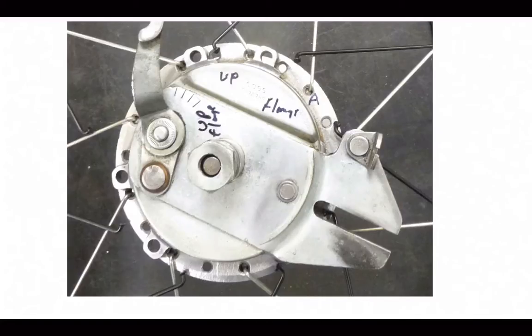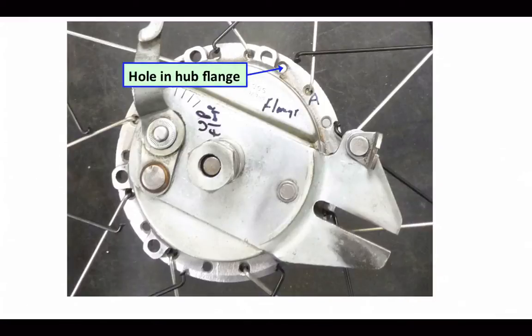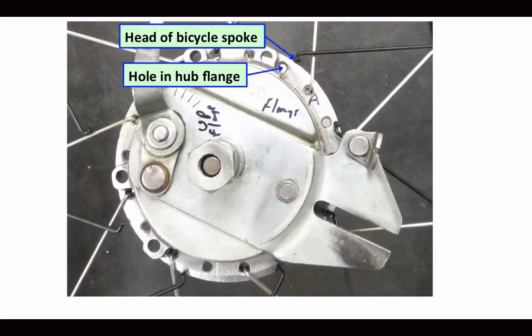Here's a close-up of one side of the hub. That's one of the holes in the hub, and you can see it's a pretty large hole, so this normal bicycle spoke, the head of the spoke is way too small, and the diameter of the spoke is too small. It would just pull right through the hole.